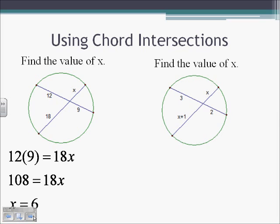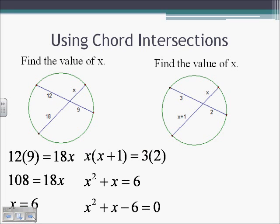Here again we have two chords intersecting inside of a circle. So we know the parts of each chord are going to equal the product of the parts of the other chord. So X times X plus 1 is going to equal 3 times 2. So we're going to get X squared plus X is going to equal 6. We subtract the 6 over: X squared plus X minus 6 is going to equal 0.